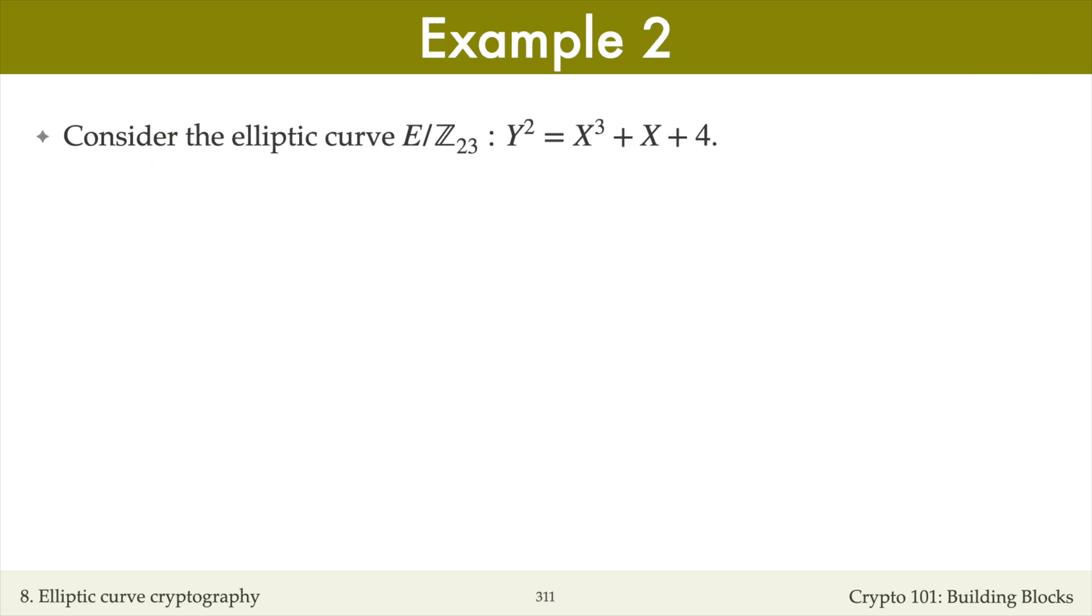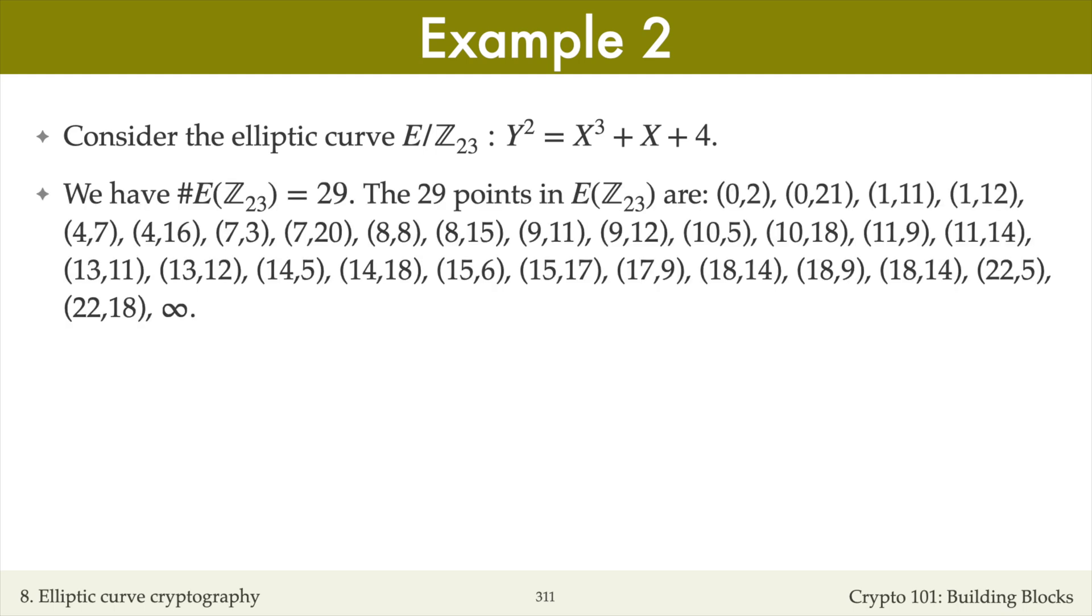Here is an example. Let's consider the elliptic curve y squared equals x cubed plus x plus 4 over the integers modulo 23. I've listed here all the points on the curve, including the point at infinity. The number of points on the curve is 29, which is a prime number.